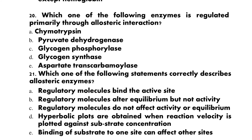Question 20: Which one of the following enzymes is regulated primarily through allosteric interaction? A) chymotrypsin, B) pyruvate dehydrogenase, C) glycogen phosphorylase, D) glycogen synthase, E) aspartate transcarbamylase. The correct option is E: aspartate transcarbamylase.